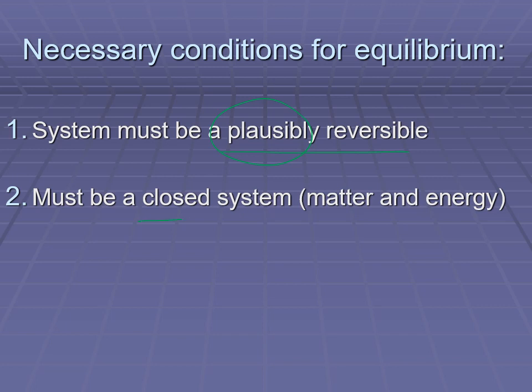It must be a closed system. We want an easily reversible system, and it has to be closed so that we're not losing the energy, and so that energy can theoretically go back and form the reactants. Theoretically, the universe itself is a closed system, but we want to do this within a plausible amount of time.